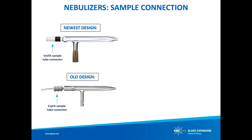Let's start by looking at some connections that are common to nearly all ICP configurations. The U-Series is our most up-to-date nebulizer design. It has a UD-Fit sample connector which easily slides over the sample inlet, in contrast to the EZ-Fit sample connector which slides into the nebulizer sample arm. It resists blockage — the sample channel is uniform from the entry point to the tip, so there's nowhere for particulates to be trapped.